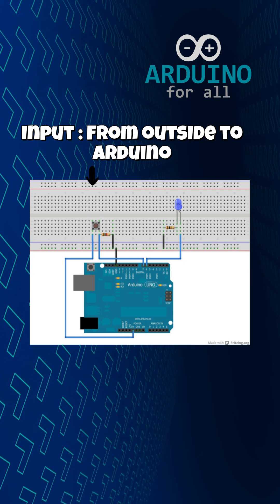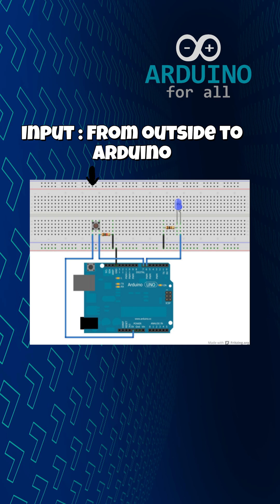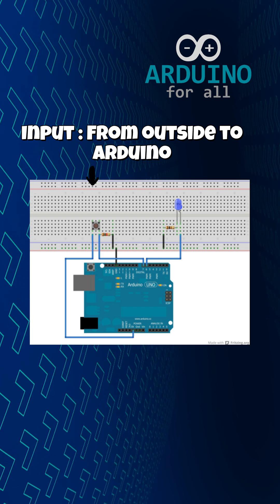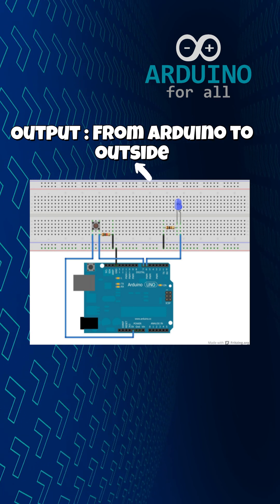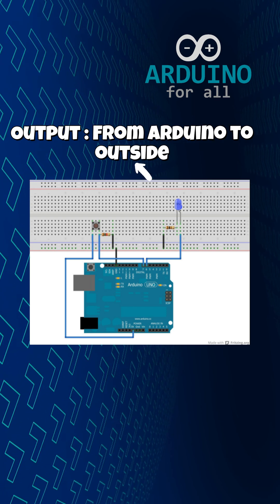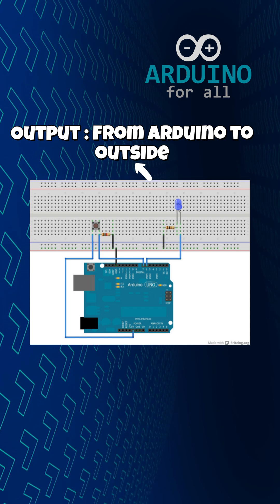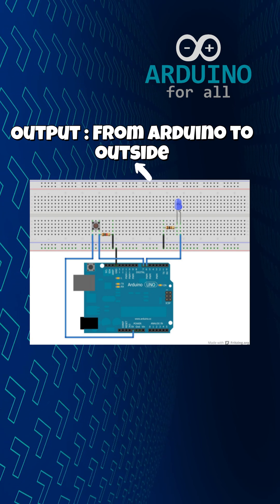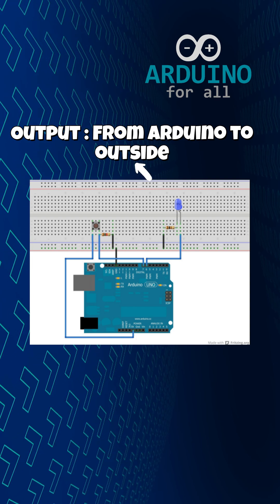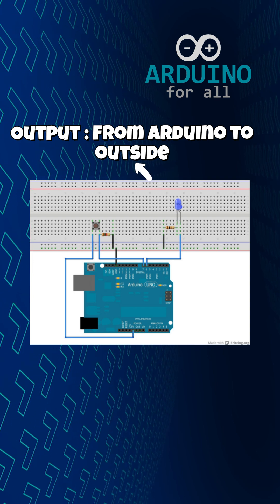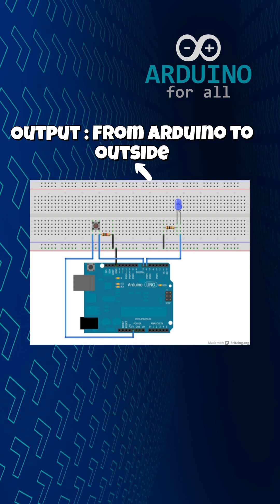On most Arduino boards, a high signal equals 5 volts and a low signal equals 0 volts. Some boards, like the ESP32 or certain sensors, use 3.3 volts instead, but the idea is exactly the same.